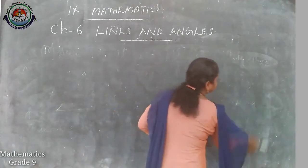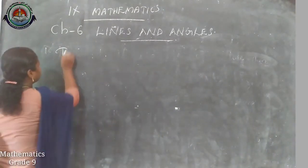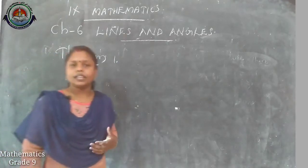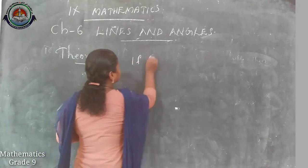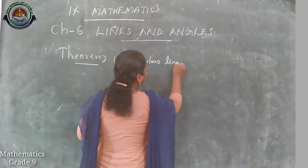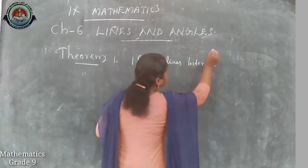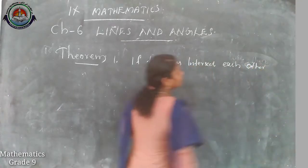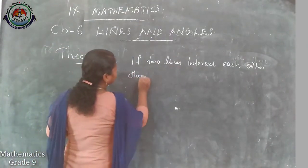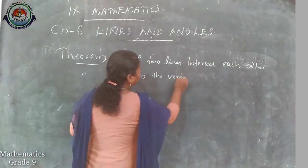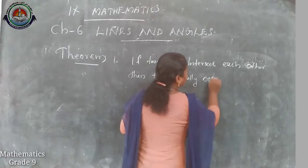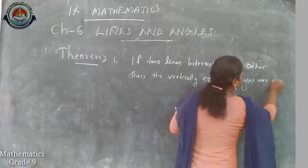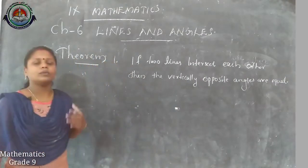We can move to our first theorem — Theorem 1. It is related to vertically opposite angles: if two lines intersect each other, then the vertically opposite angles are equal.